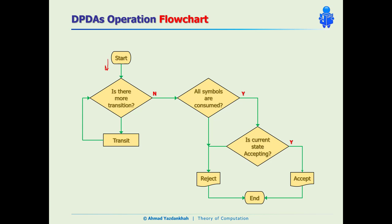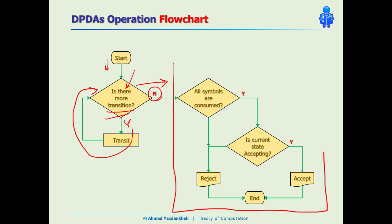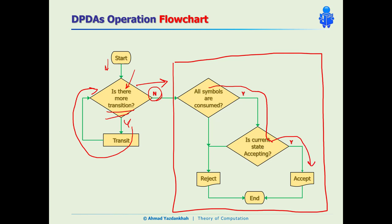Here is a flowchart of how PDAs work: the machine always checks whether any transition is available. If yes, it transits and checks again. If no transition is available, it checks whether all symbols are consumed and whether the current state is an accepting state. If both conditions hold, the string is accepted; otherwise it is rejected. See you in the next lecture.